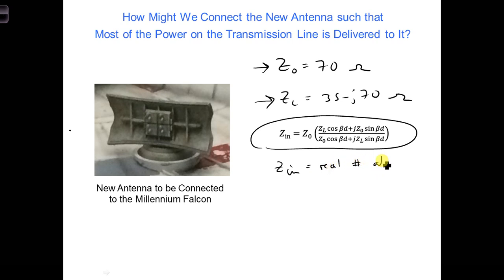Is there a position D where zin is a real number? Later on, we'll worry about matching that real number to z0. But right now, is there a position D where zin is equal to a real number?